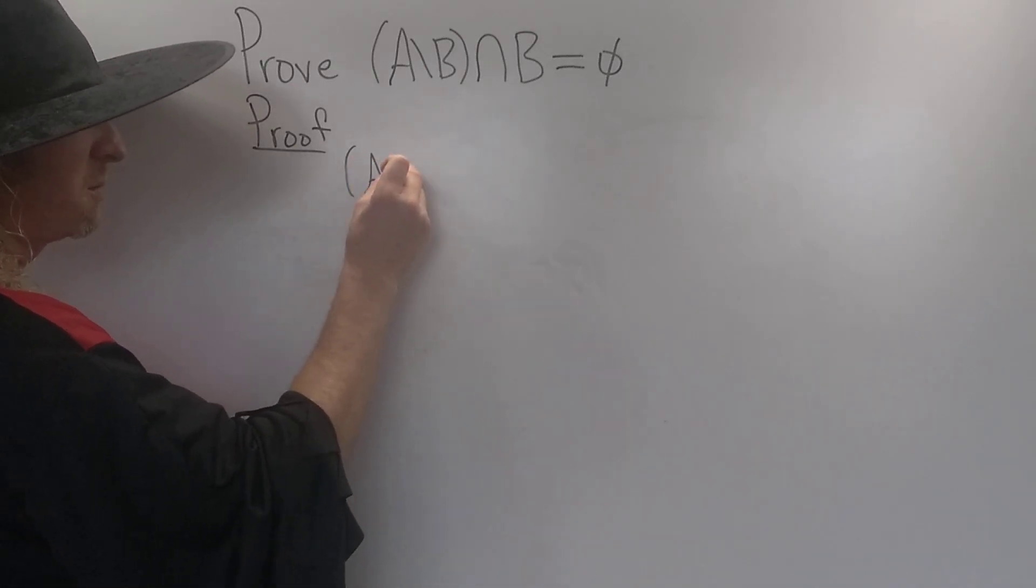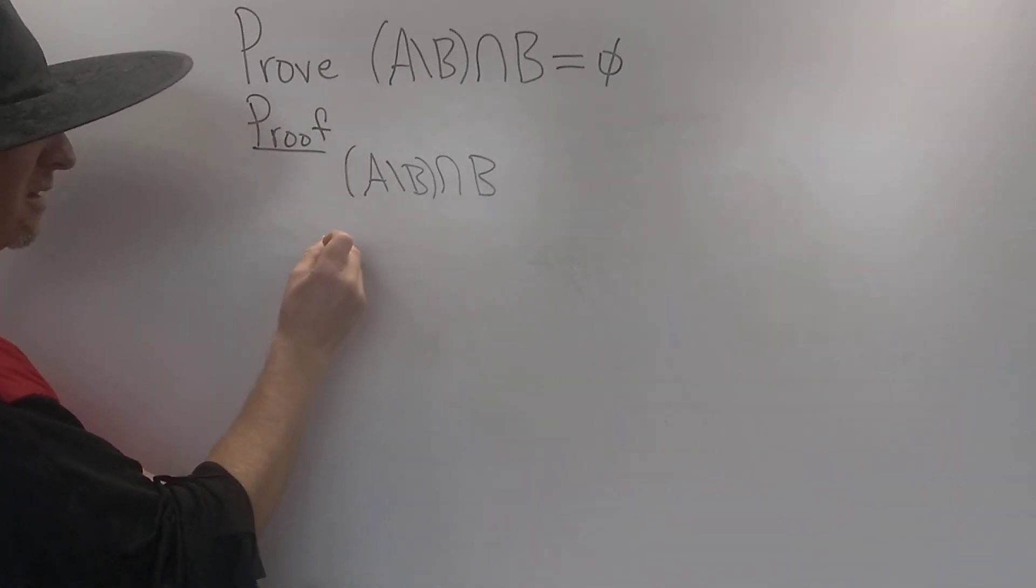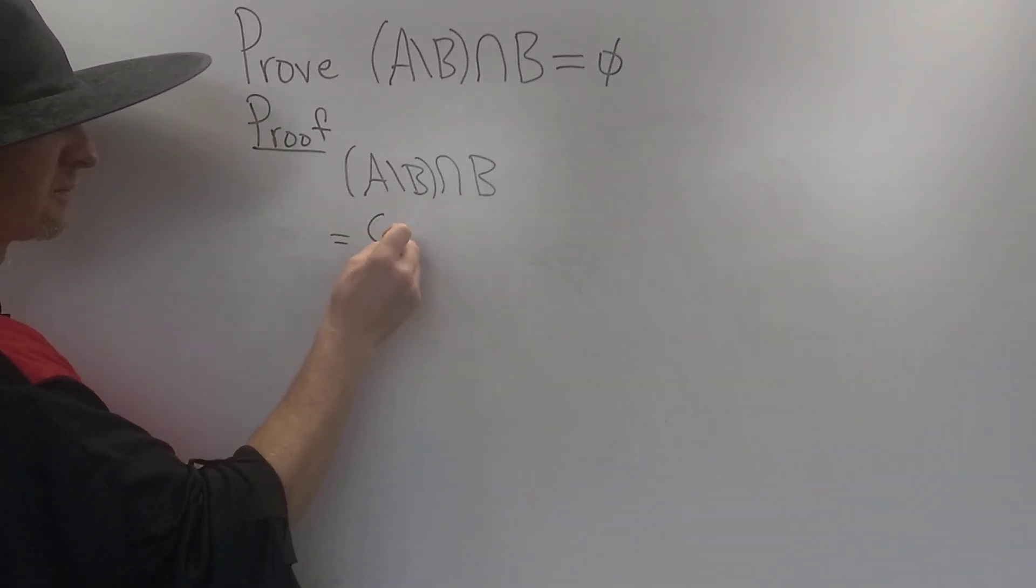So we have A set minus B, intersection B. So what is that? What's the set of all X?